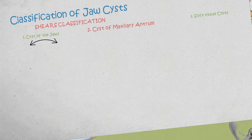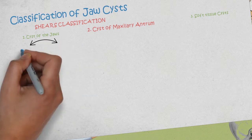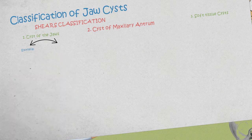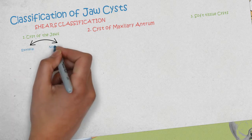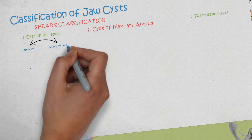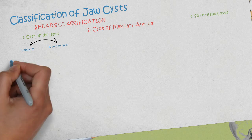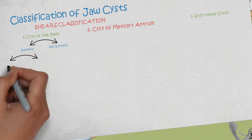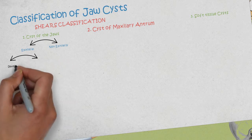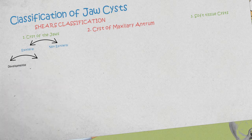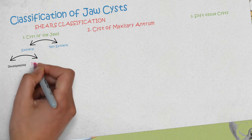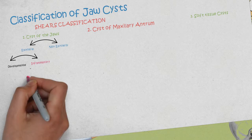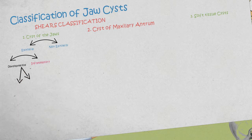The cysts of the jaws comprise epithelial and non-epithelial cysts. The epithelial cysts can be divided into developmental or inflammatory. The developmental can also be subdivided into odontogenic or non-odontogenic cysts.